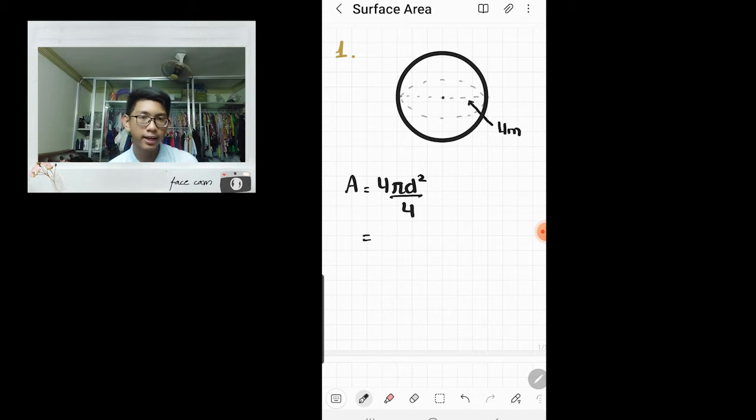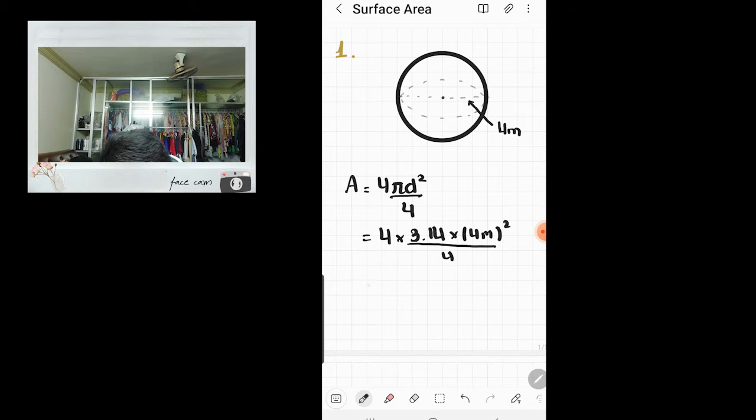Now let's plug in the values. Pi is 3.14 and our diameter is 4 meters. So 4 meters squared divided by 4. Let's do the exponents first. So 4 times 3.14 times 16 meters squared over 4.